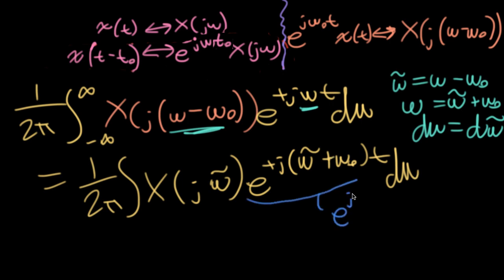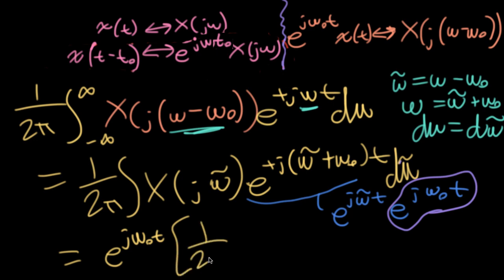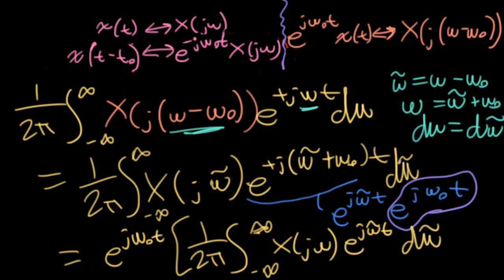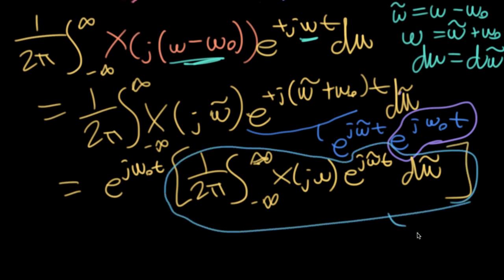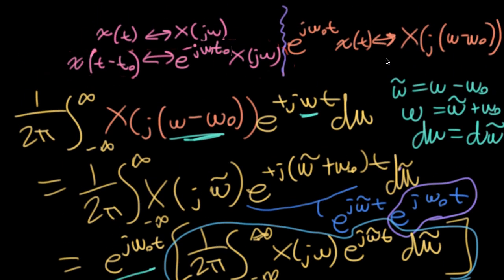So I'll rewrite this as 1 over 2 pi big X(j omega tilde) times e to the plus j (omega tilde plus omega naught) t d omega tilde. So this splits up into e to the j omega tilde t times e to the j omega naught t. The bit with the omega naught t here that's constant with respect to omega tilde. Sorry, I forgot to add that tilde earlier. So that can be pulled out in front. And I can rewrite this whole thing as e to the j omega naught t times 1 over 2 pi integral from minus infinity to infinity big X(j omega) e to the j omega tilde t d omega tilde. And now this whole thing here just looks like little x(t) because it's the inverse transform of big X(j omega) without anything else weird going on. So that gives me my e to the j omega naught t times x(t), which is what you see up here.